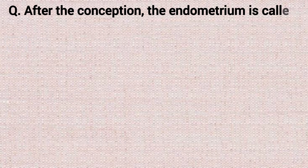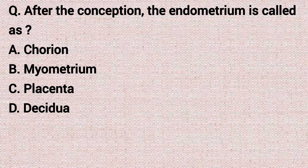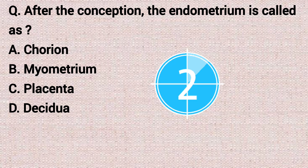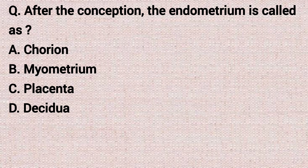The next question: after conception, the endometrium is called as — option A: chorion. Option B: myometrium. Option C: placenta. Option D: decidua. The correct answer is option D, decidua.